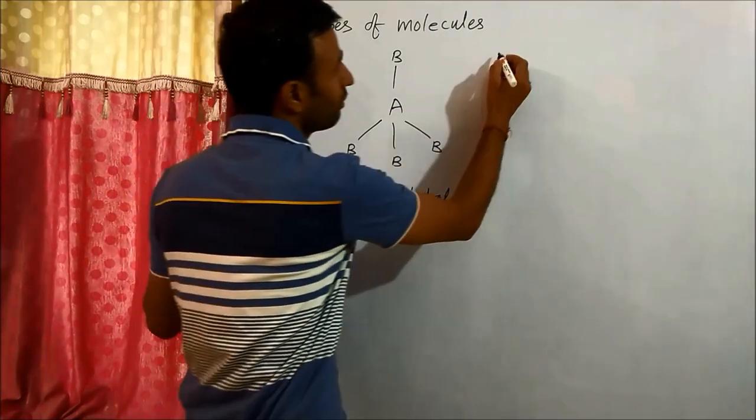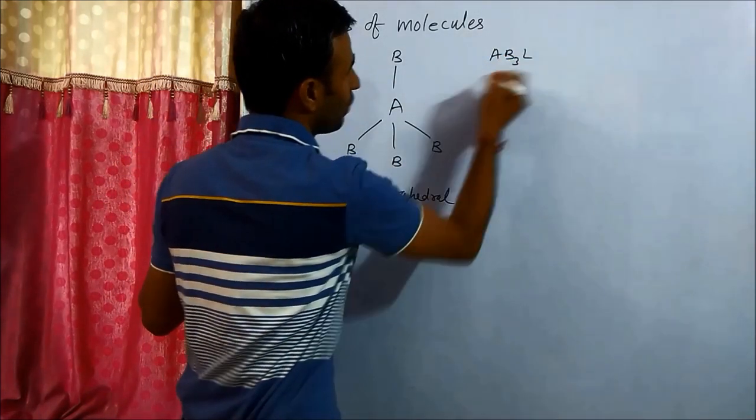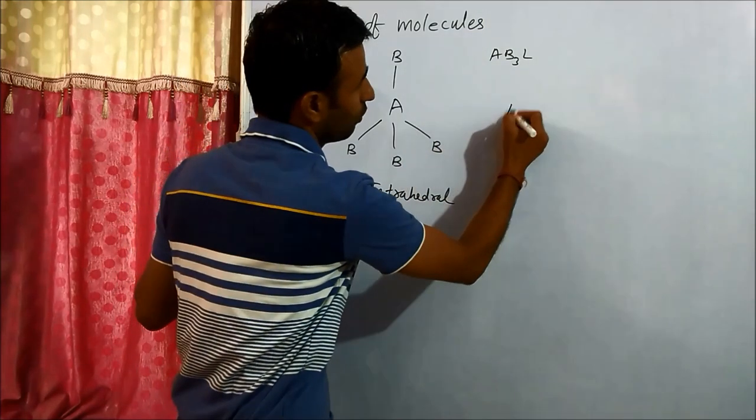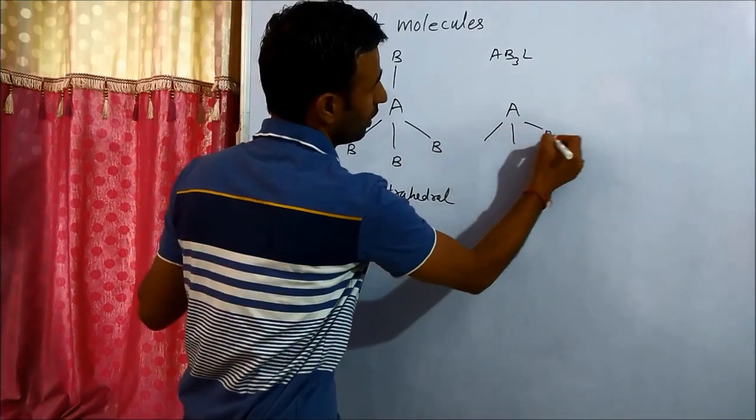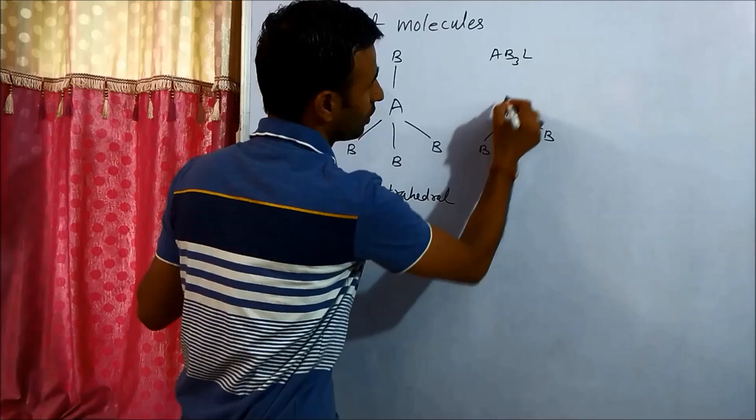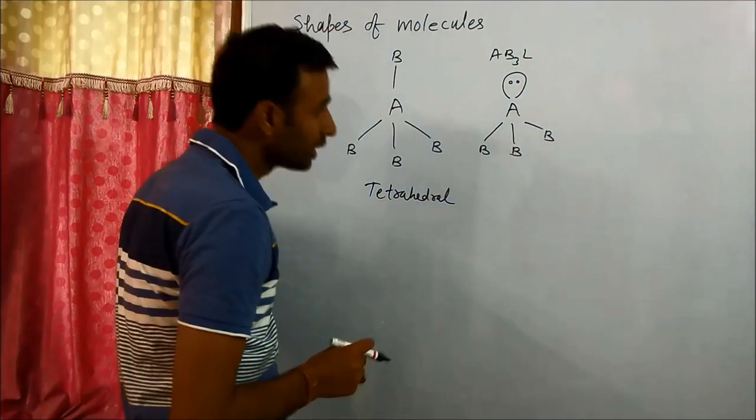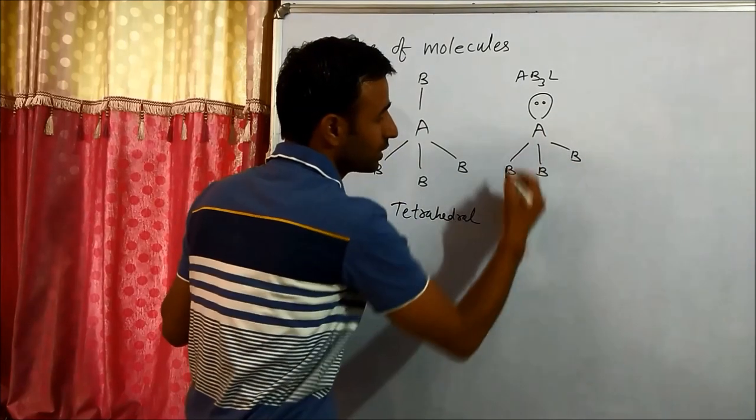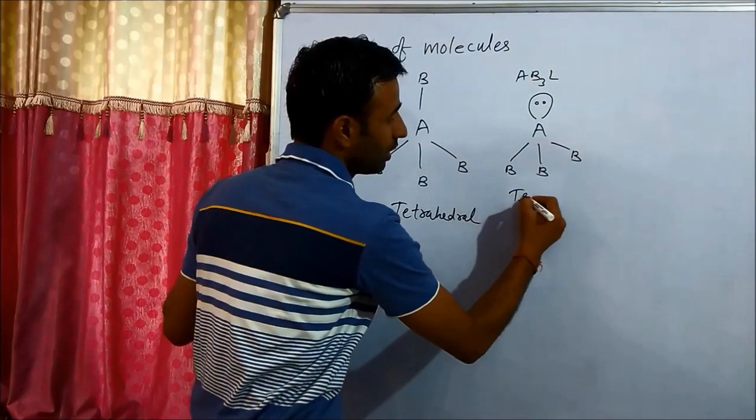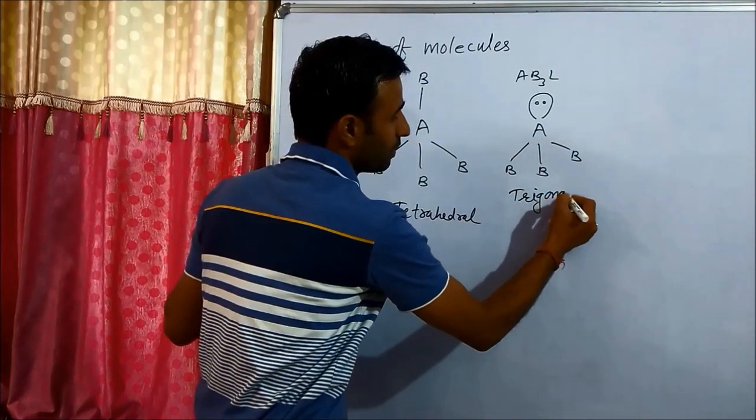If we have three bond pairs and one lone pair, one position of the tetrahedral is occupied by the lone pair. The shape is now trigonal pyramidal.